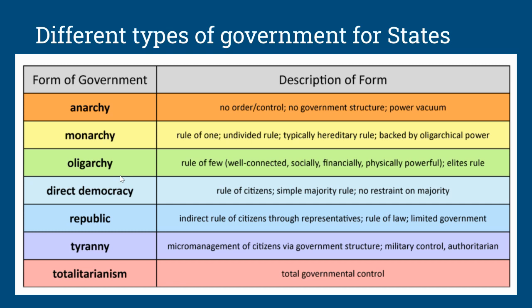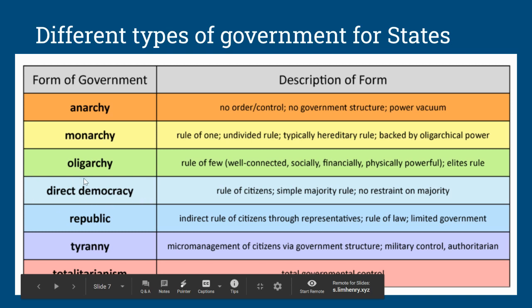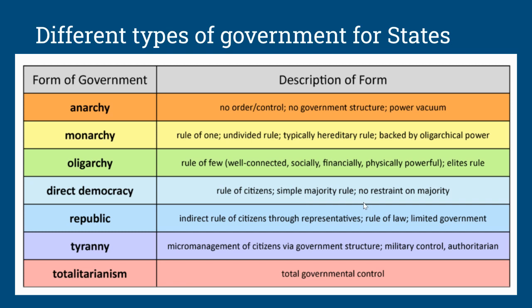Oligarchy is the rule of a few — these are powerful, mainly rich, elite people who are ruling over everyone else, just a group of people ruling. Direct democracy is when citizens are ruling. There's simple majority rule, so if every citizen voted, that is direct democracy and you go by the majority rule.